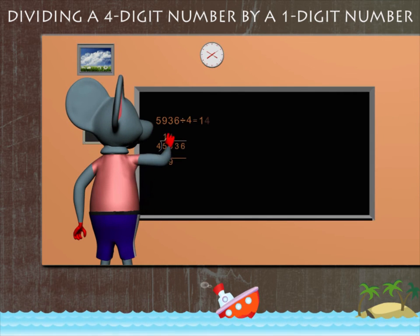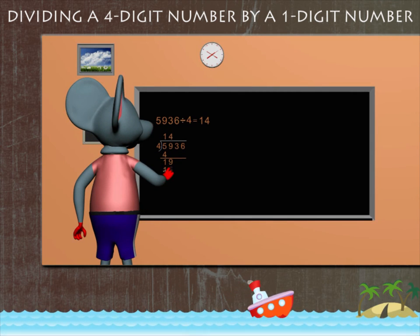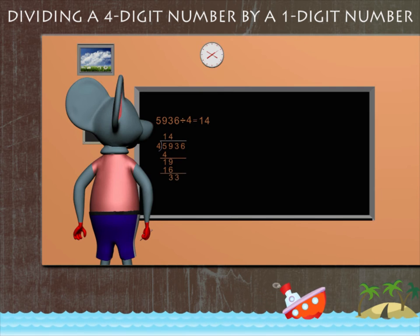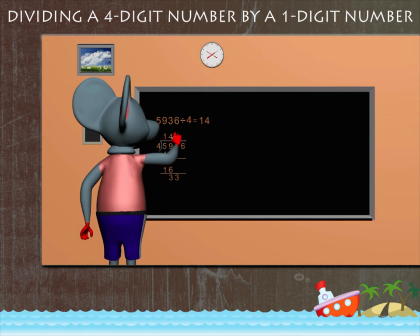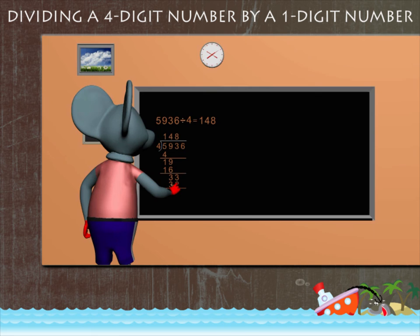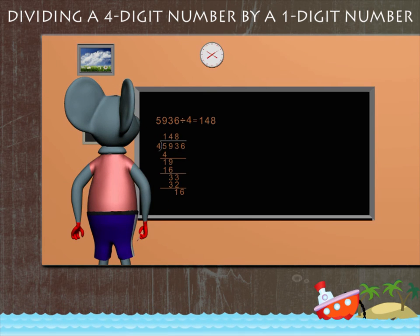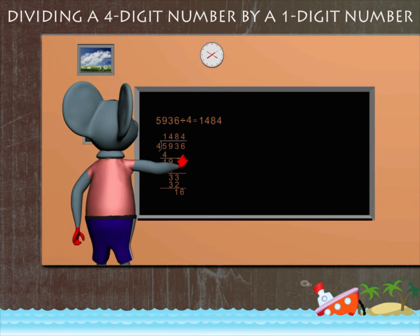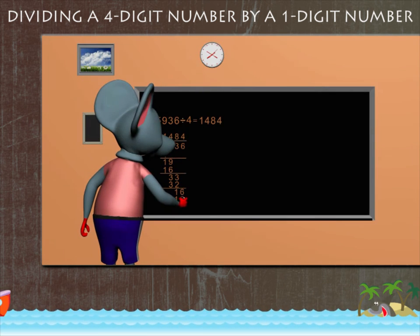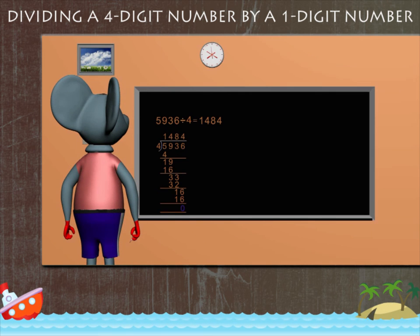Copy the next digit three. Four divides 33 eight times - quotient eight and remainder one. Copy the next digit six. Now four divides 16 four times, so quotient four and no remainder.